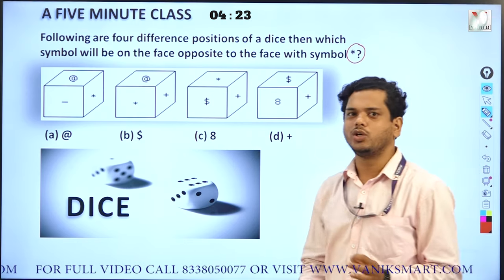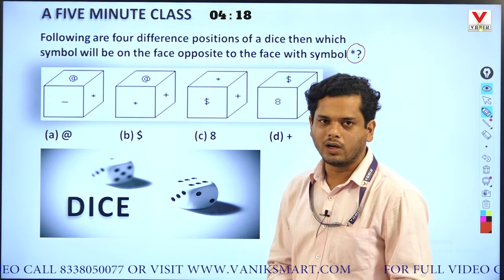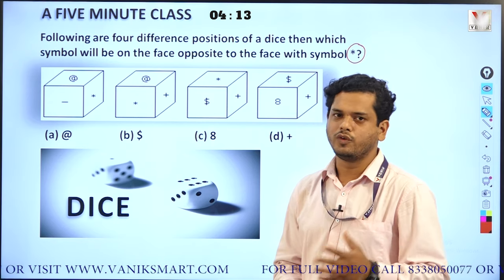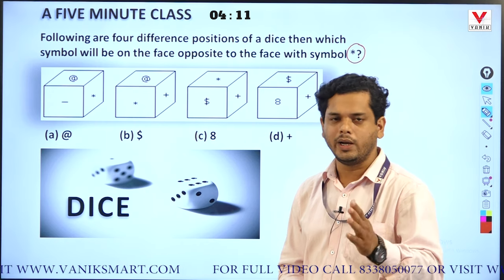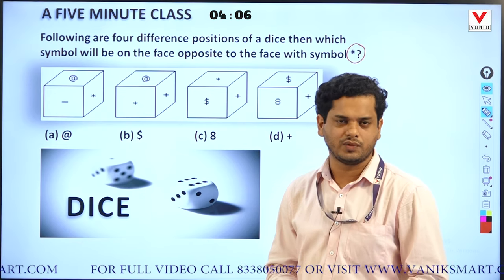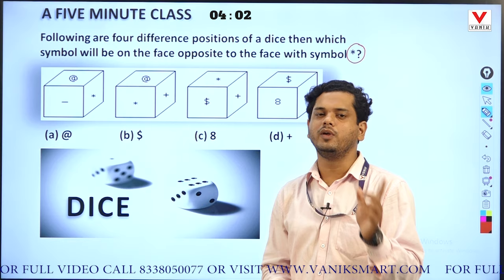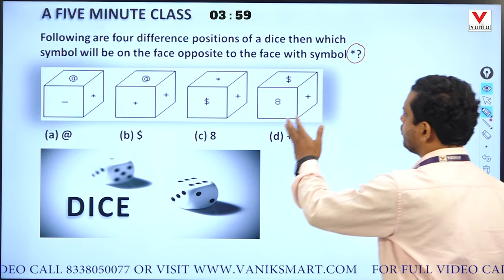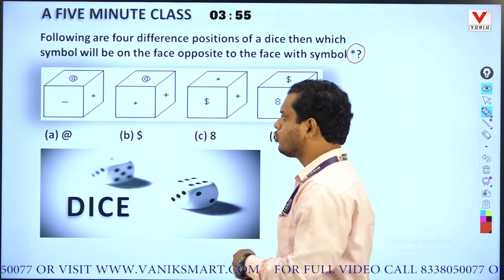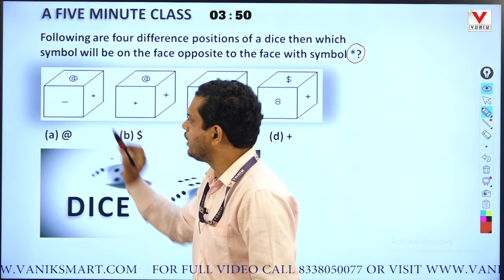The best option is cancellation method. The rule is: if any face is adjacent, then it cannot be opposite. Keep in mind, any opposite face cannot be an adjacent face and vice versa. Adjacent faces cannot be opposite and opposite cannot be adjacent faces. Here we have to identify the opposite of star. The adjacent are at-the-rate and minus.